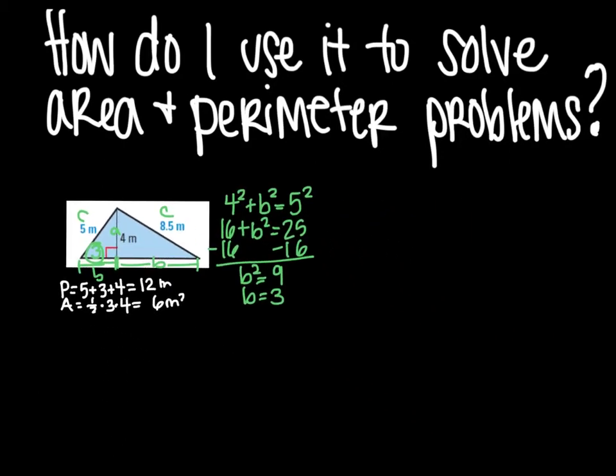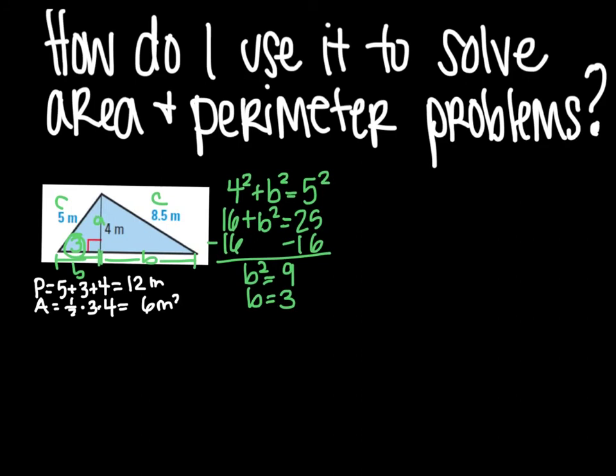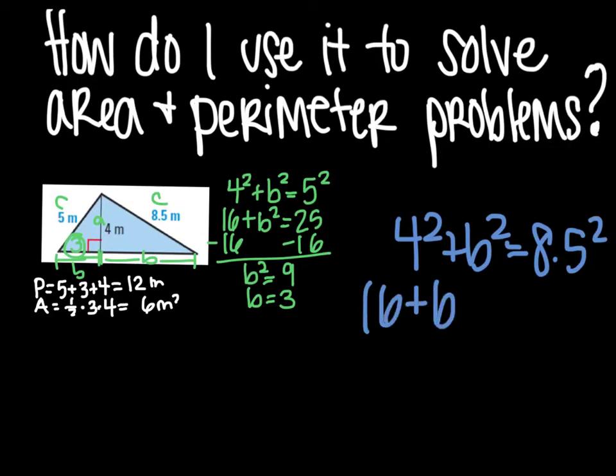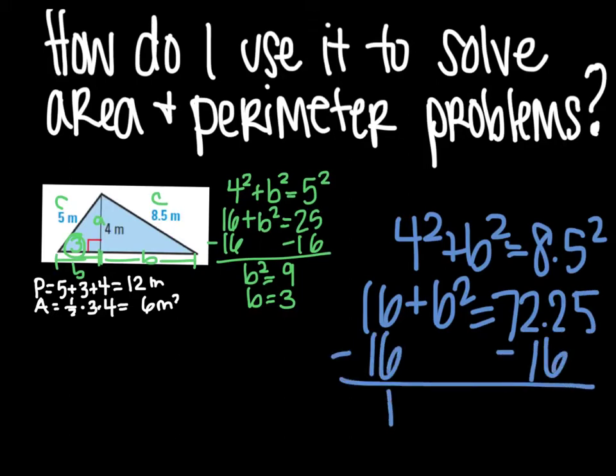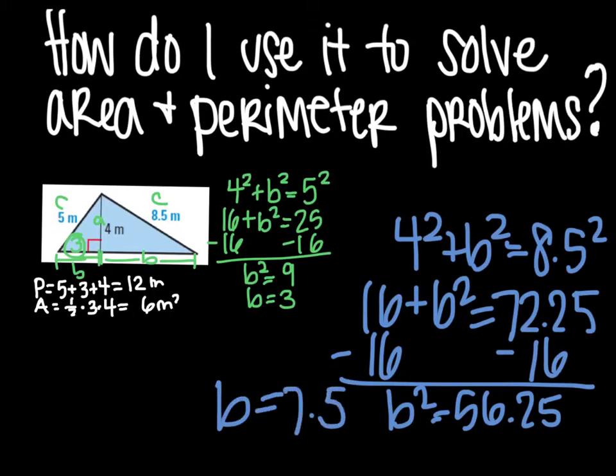Then we can use it to find the perimeter and area of the somewhat bigger triangle. So we have 4 squared plus B squared equals 8.5 squared. So 16 plus B squared equals 72. Then we're going to subtract 16.